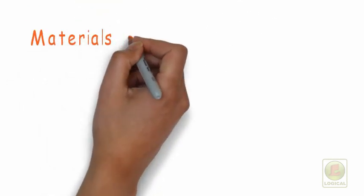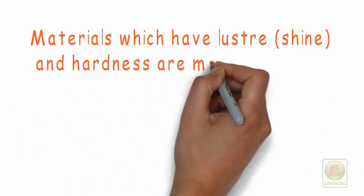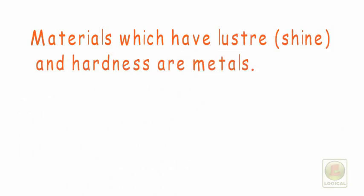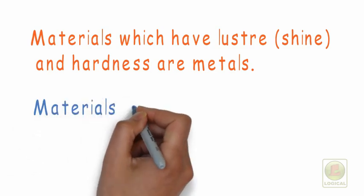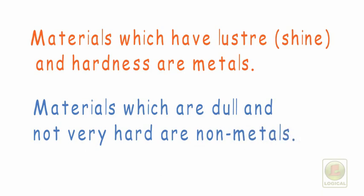Thus, we can say that materials which have luster and hardness are metals, while the materials which are dull and not very hard are non-metals.